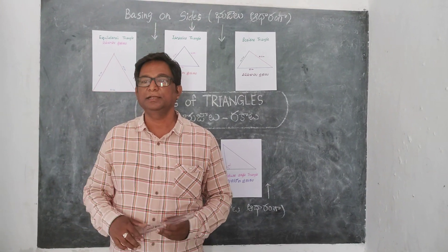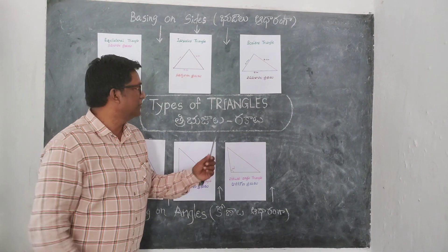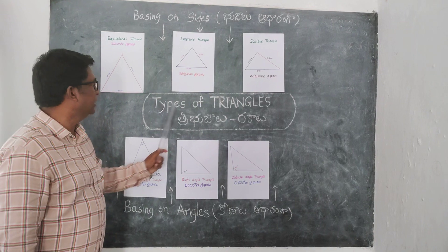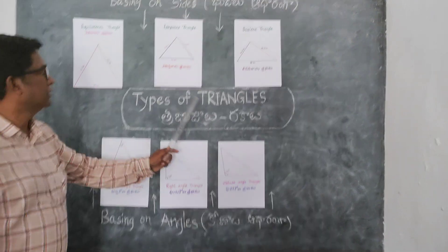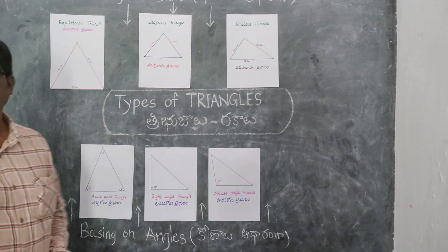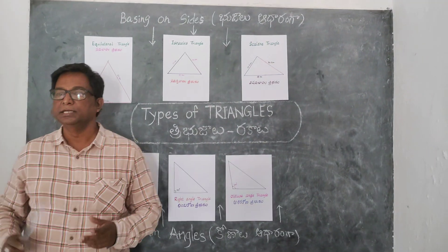Hi children. Hi. Look at the blackboard. Come and read this one. Types of triangles. Types of triangles.